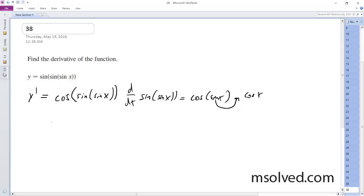what we have is cosine of sine of sine of x, times the cosine of sine of x, and then just cosine of x. And this is it.